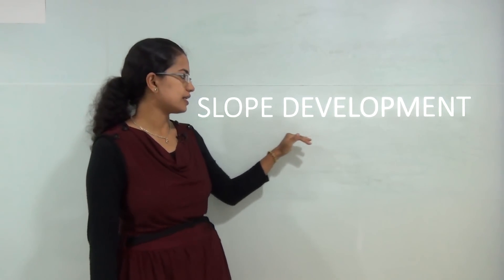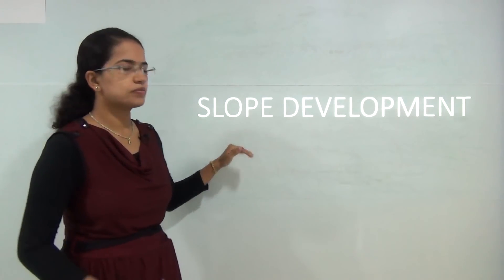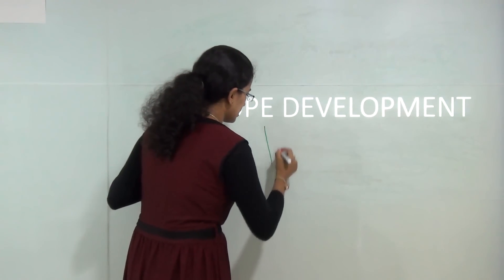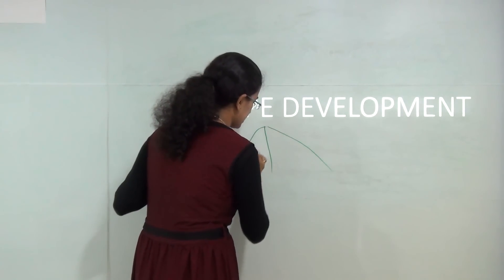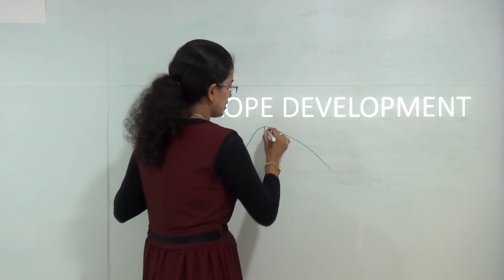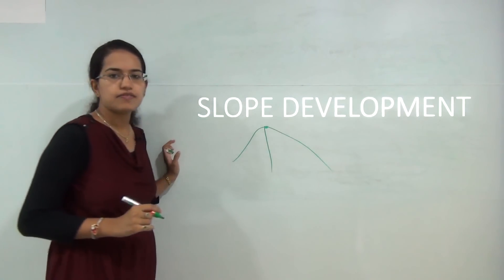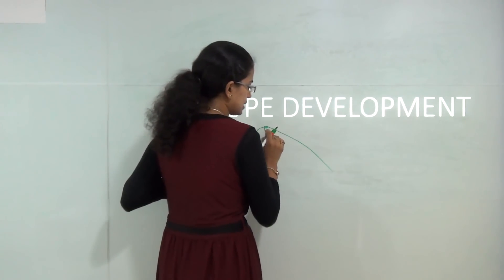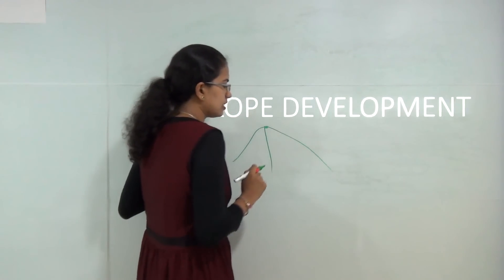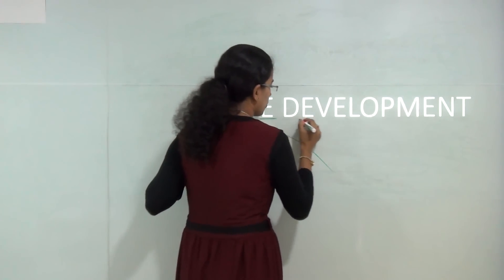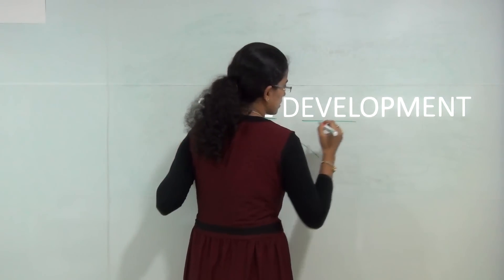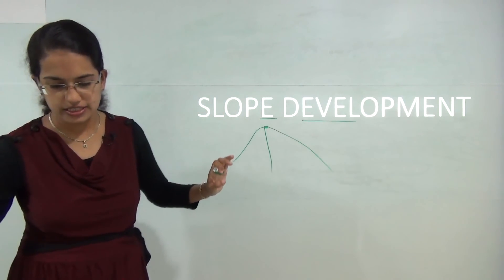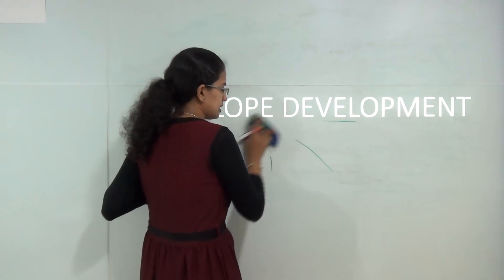In this session we will be understanding slope development. If there is a mountain, the angle between the valley bottom and the hill top would be known as the angle of slope. This slope is important to understand the various cycles of erosion — it is an angular inclination that lies between the hill top and the valley bottom.